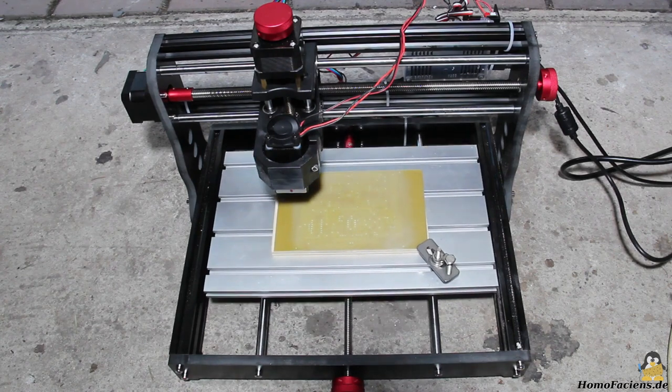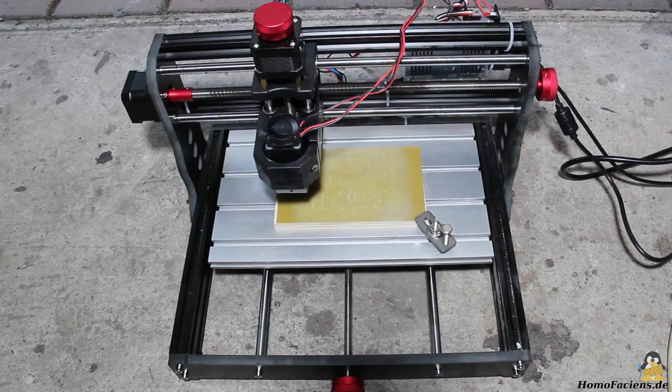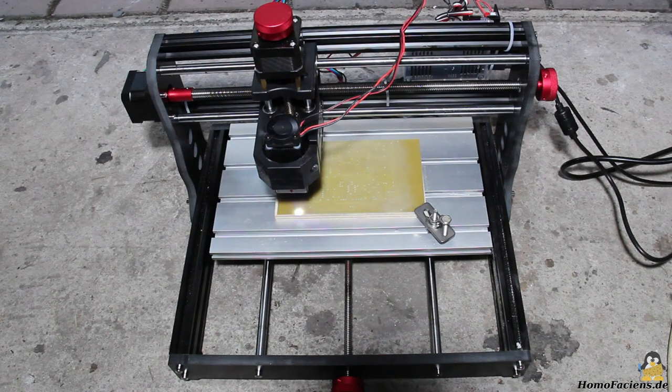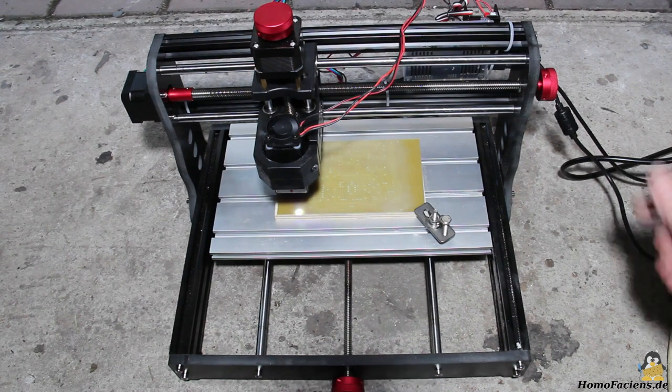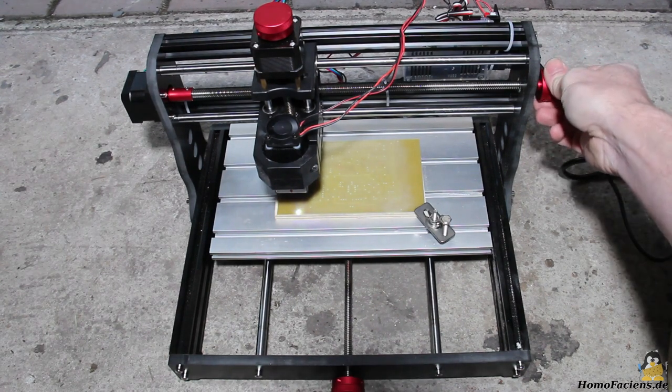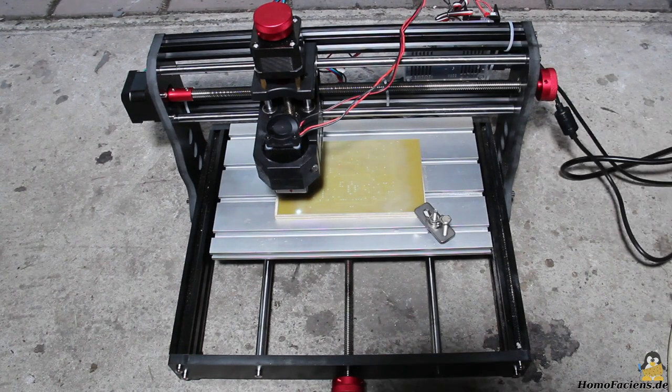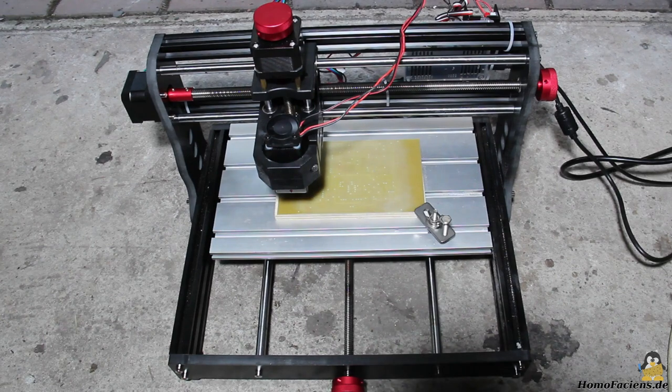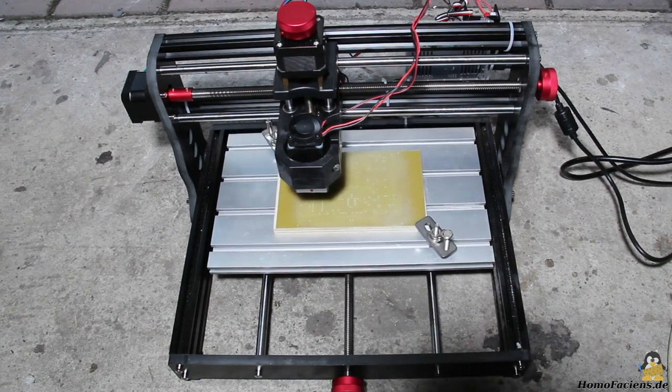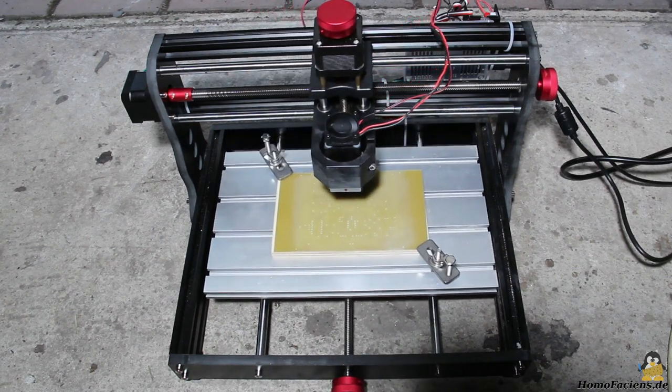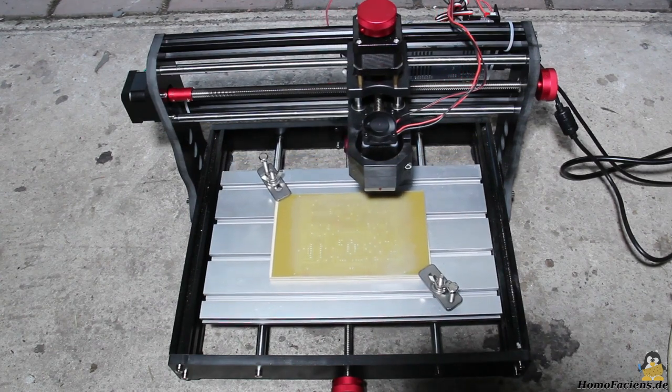The script now moves the laser head to the lower left corner of the board and turns the laser on to just 1% of its maximum power. The laser beam must now be focused on the surface and afterwards the laser point must be moved to the lower left hole using the hand wheels. After this position is confirmed with enter, the laser now moves to the top right corner.